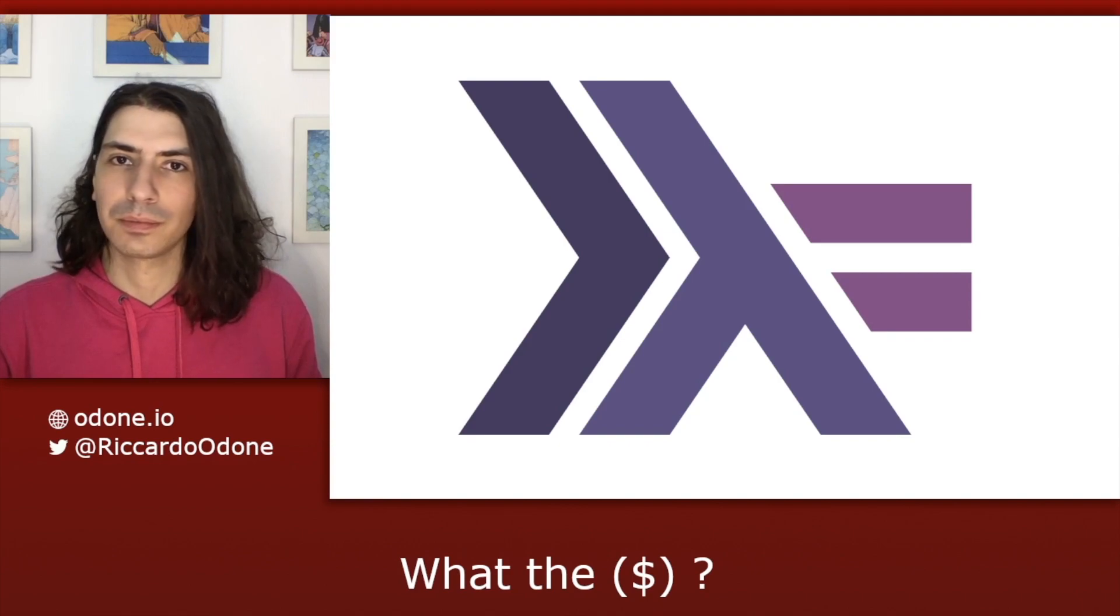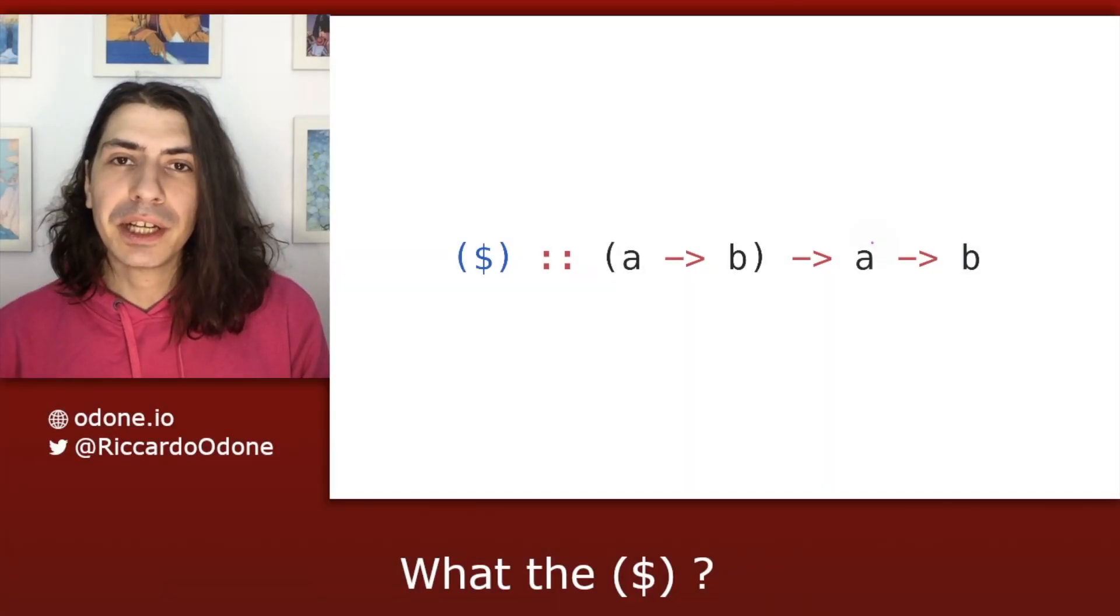Let's take a look at the type signature. So here we have the type signature for dollar, which as you can see, takes two arguments.